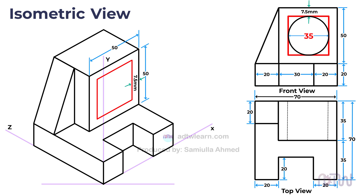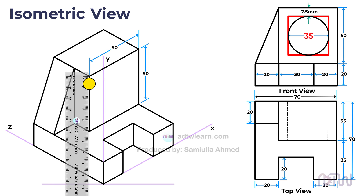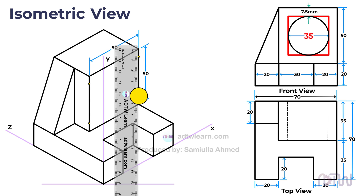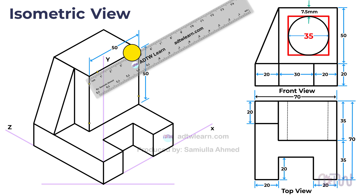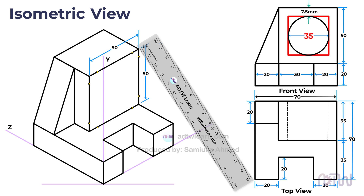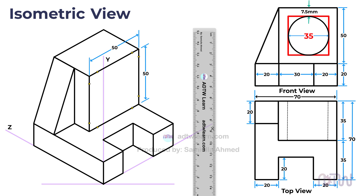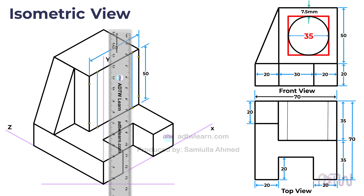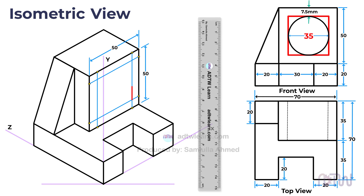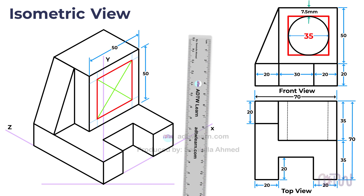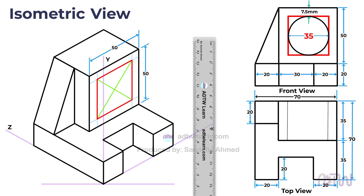To draw the inner square, mark points 7.5 millimeters away from each corner of the outer square. Then draw vertical lines from these points and parallel lines to the x-axis. This will give us the required square with 35 millimeters sides. Next, draw the diagonals on the square by joining opposite corner points. To find the radius needed to draw the circle, divide the side of the square in half: since the sides are 35 millimeters, half of that is 17.5 millimeters. Mark points 17.5 millimeters away from each corner point of the sides.